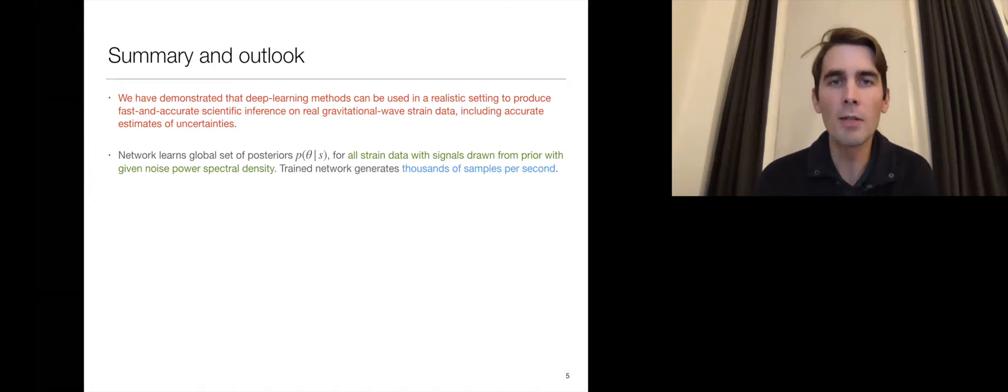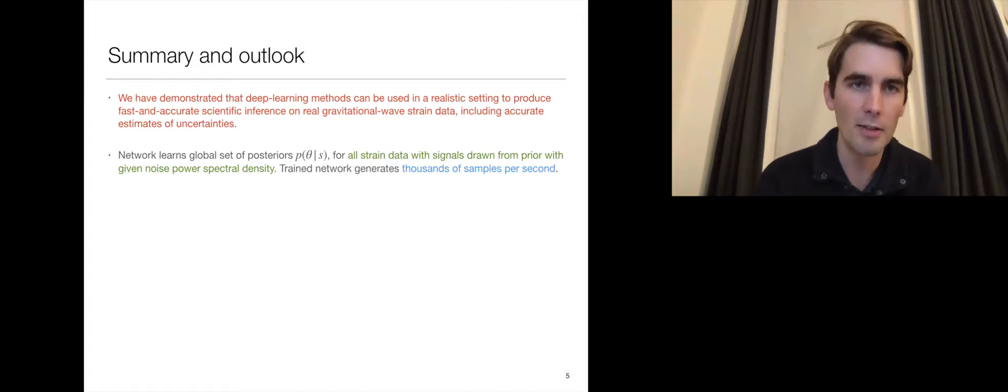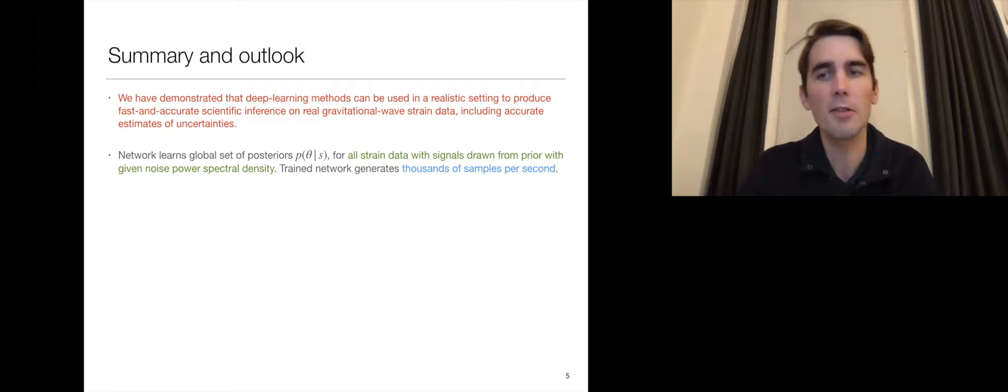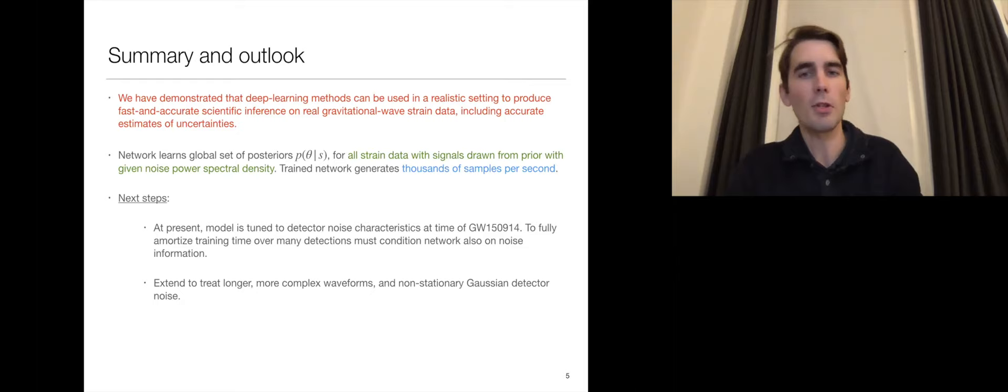To summarize, we demonstrated that deep learning methods, namely the normalizing flow with simulation-based inference, can be used to produce fast and accurate parameter estimation results on real gravitational wave strain data, including accurate estimates of uncertainties. I think that's the first time this has really been done. Moreover, the network learns a global set of parameters for all signals, all possible signals consistent with the prior and the given noise properties. Once this is trained, you can generate thousands of samples per second.